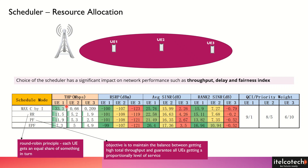But we don't want this particular user to get all the resources. We would like a better scheduler mode. In that case, there is the Round Robin principle, which provides an equal number of resources across all users. But this is not very effective — if a cell has 100 PRBs, we are providing 33 PRBs to each of the three different users.